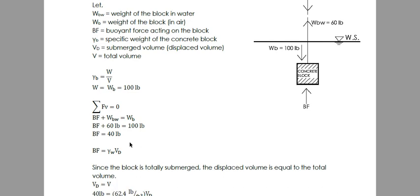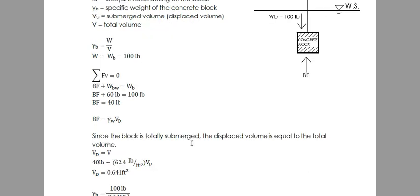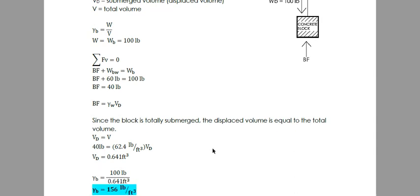What we need to solve for gamma of the block is the weight, which is given, and the volume. We will now use the buoyant force to solve for the volume of the block. Since the block is totally submerged, displaced volume is equal to the total volume.